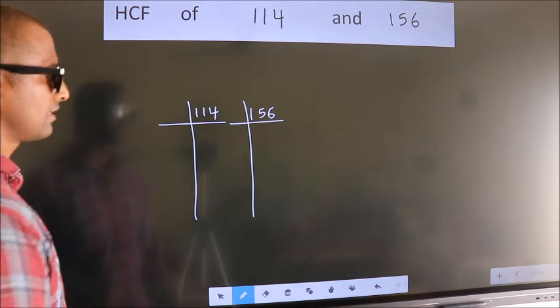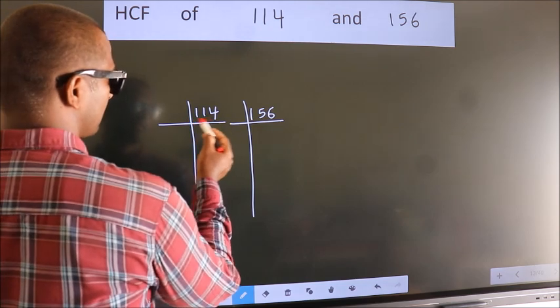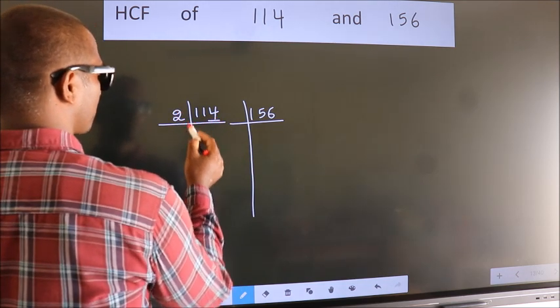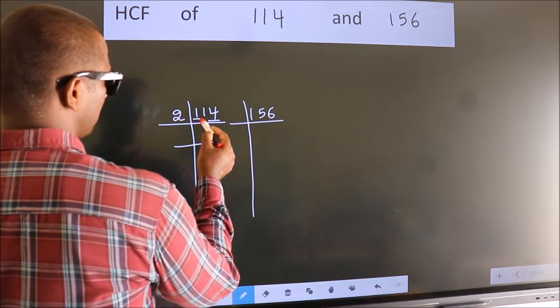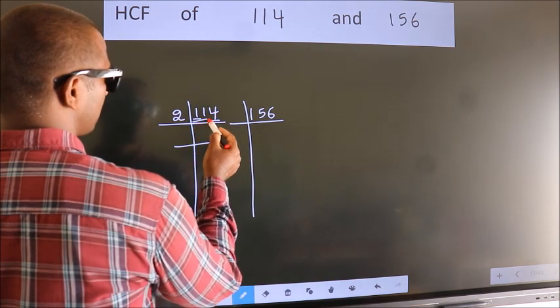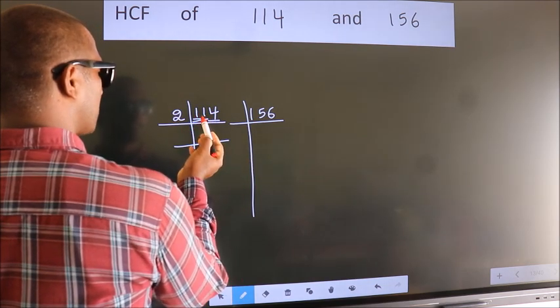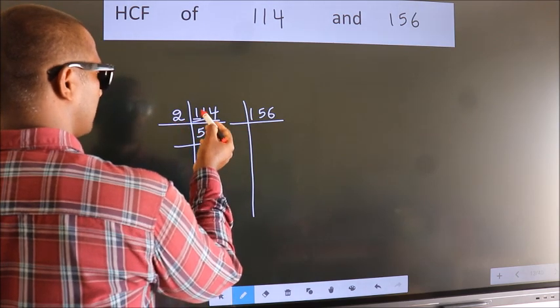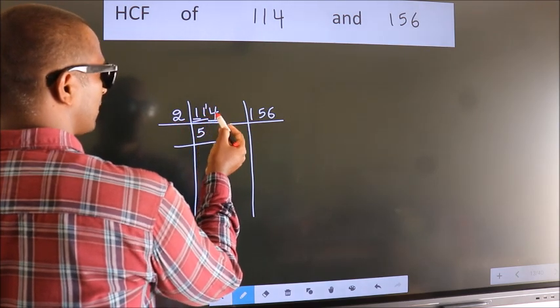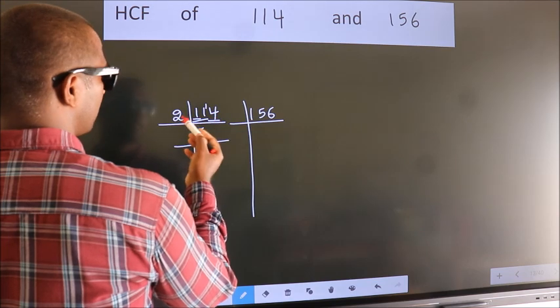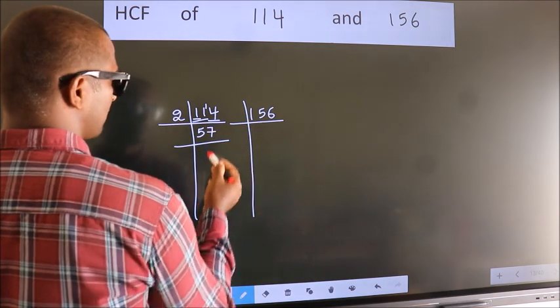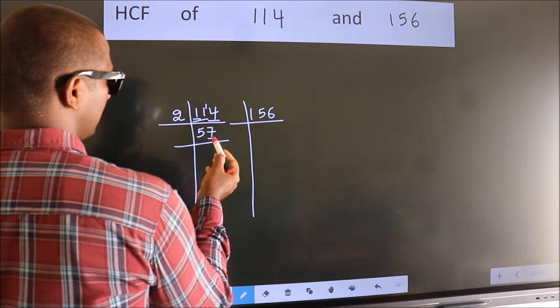Next. In this number, last digit 4, even number, so take 2. First number 1 smaller than 2, so 2 numbers 11. A number close to 11 in 2 table is 2 fives 10. 11 minus 10, 1, 1 carried forward 14. When do we get 14 in 2 table? 2 sevens 14. Now, last digit 7, not even.